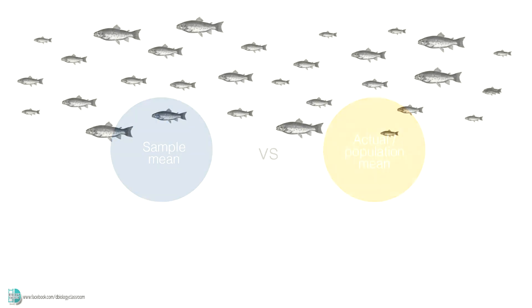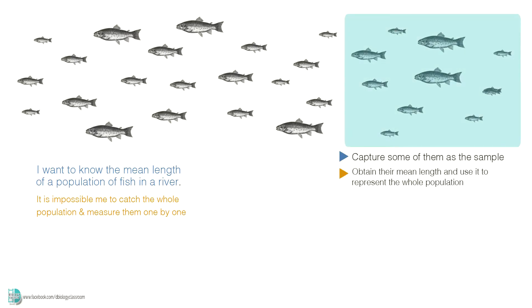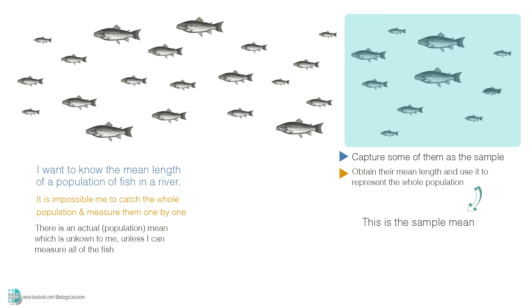Let's say I want to know the mean length of a population of fish in a river. It is not possible for me to catch all of the fish and measure them one by one. All I can do is capture some of them as the sample and use their length to estimate what is the mean length of all of the fish in that habitat. The mean length of the fish which I measured is the sample mean. There is an actual mean length which is unknown to me, unless I can measure every single one of the fish living in the river.